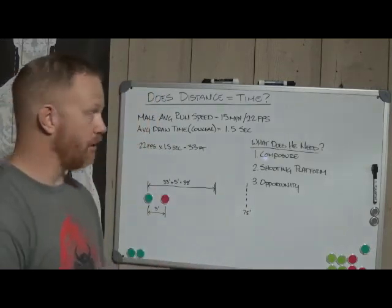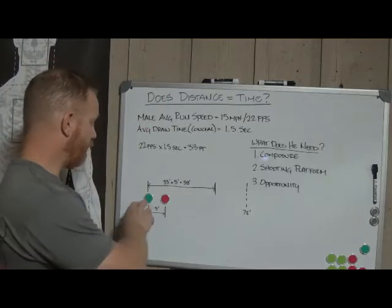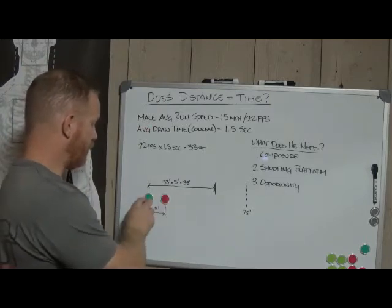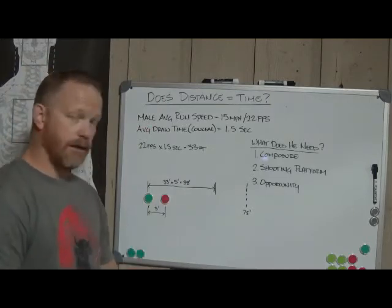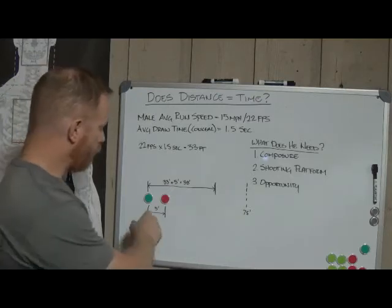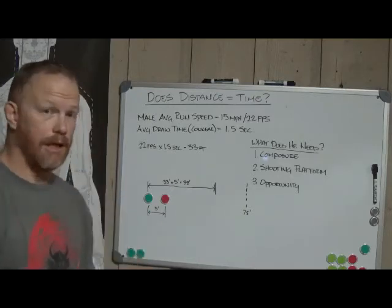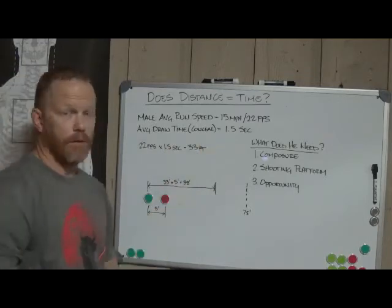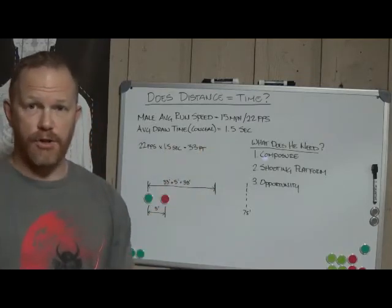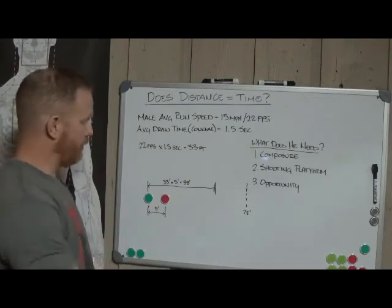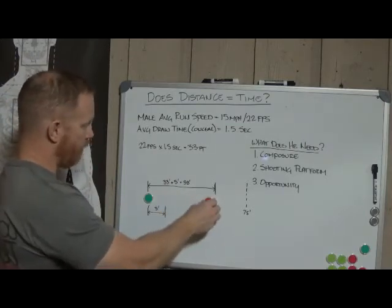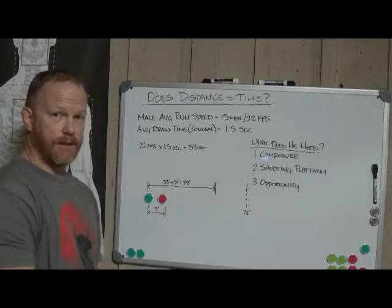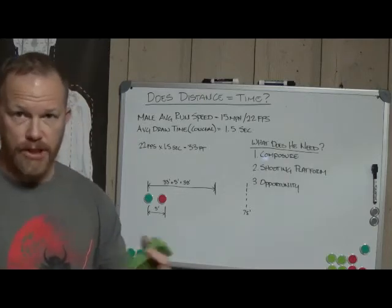So let's look at it. We have an individual here, green guy, red guy here, and they are roughly five feet apart. Now the average male running speed is 15 miles an hour, which comes out to 22 feet per second. So in one second, this individual can cover 22 feet. That's basically roughly where you get the 21 foot rule.